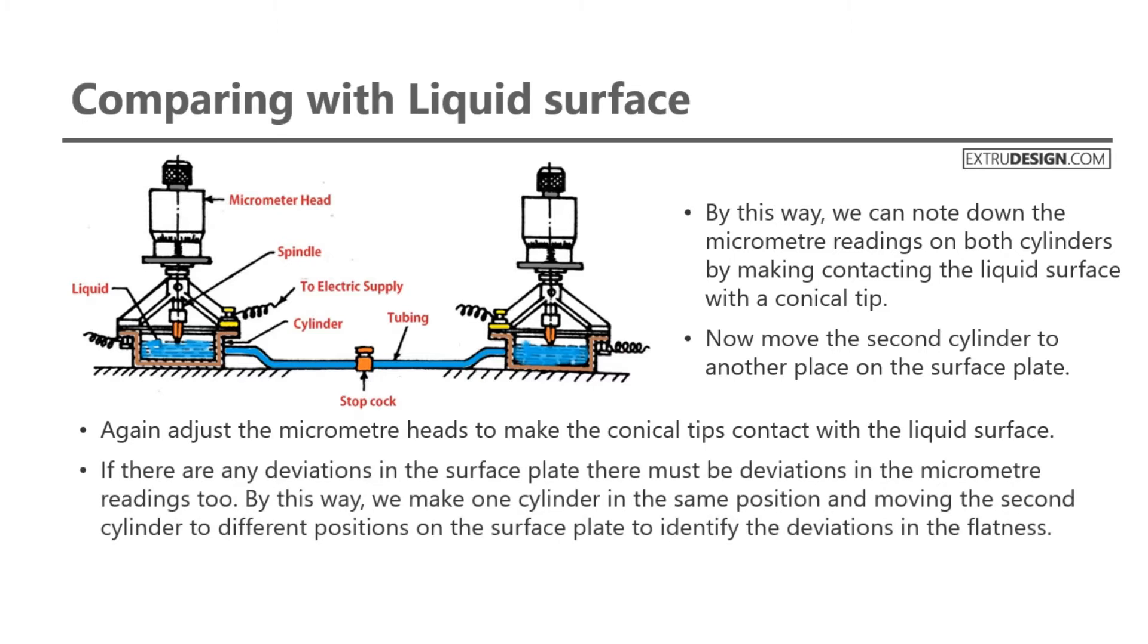If there are any deviations in the surface plate, there must be deviations in the micrometer readings too. By this way, we keep one cylinder in the same position and move the second cylinder to different positions on the surface plate to identify the deviations in flatness.